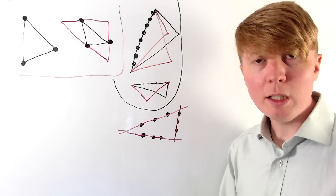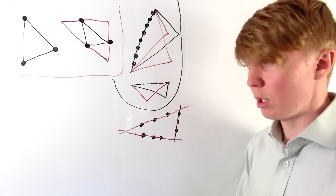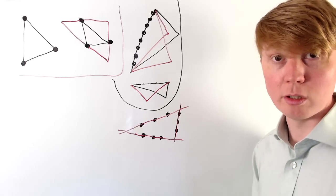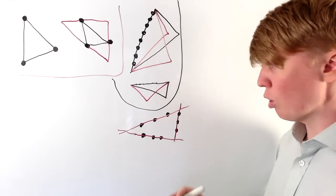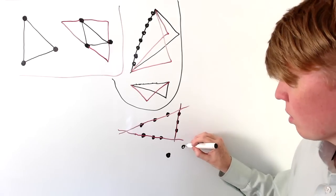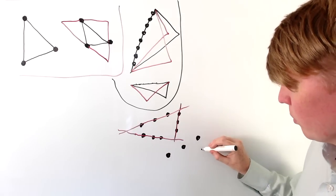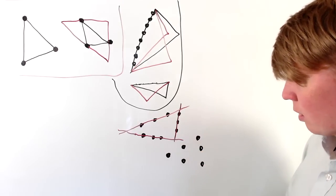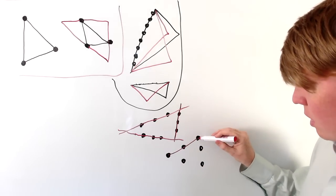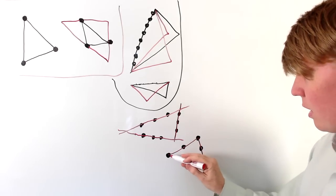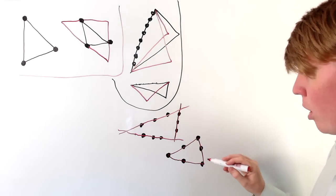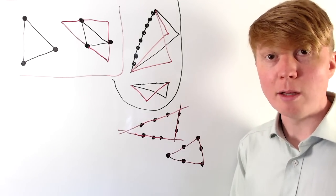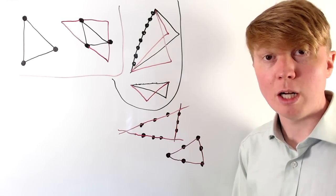But we can refine this further — we can go lower than nine. Here we've used three sets of three collinear points, but there's no reason our sets can't overlap with each other. So we could actually do this with as few as six: we form a triangle where there's no option other than to connect these three to form one side, these three for another side, and these three for the remaining side.